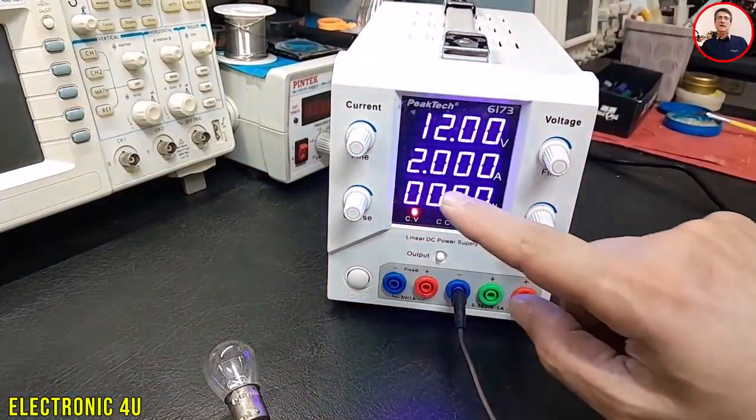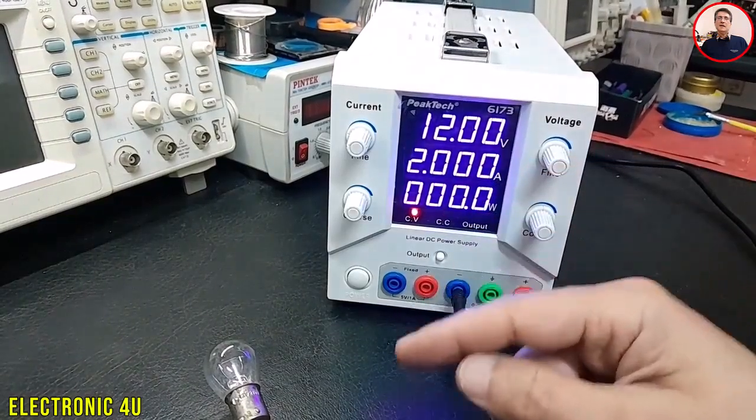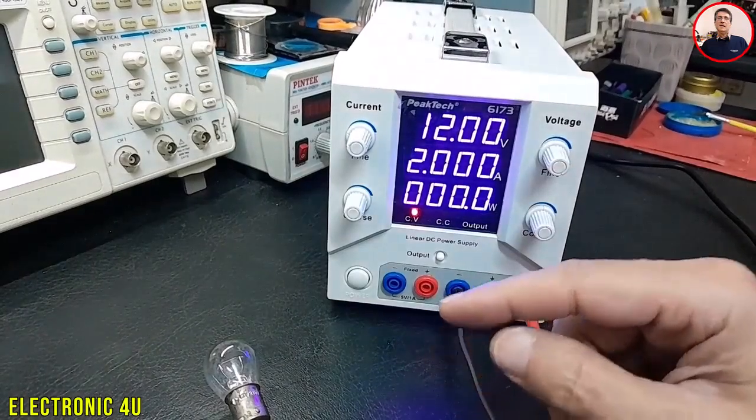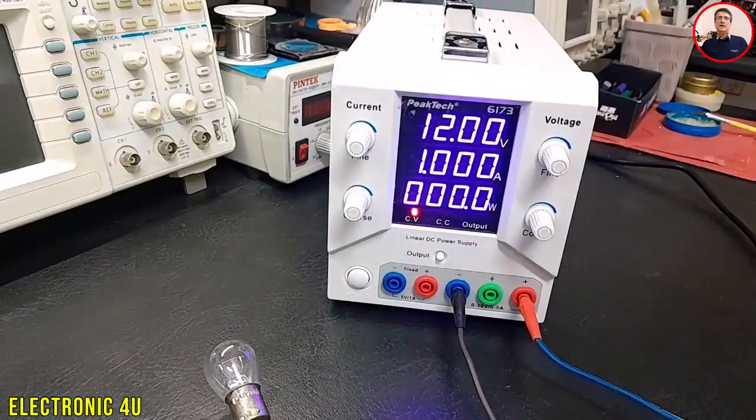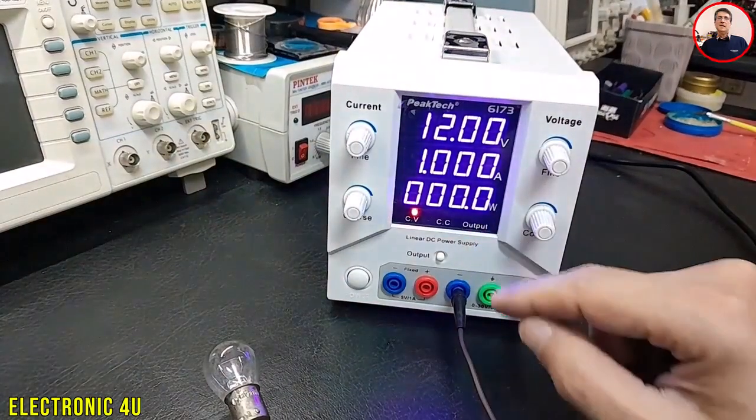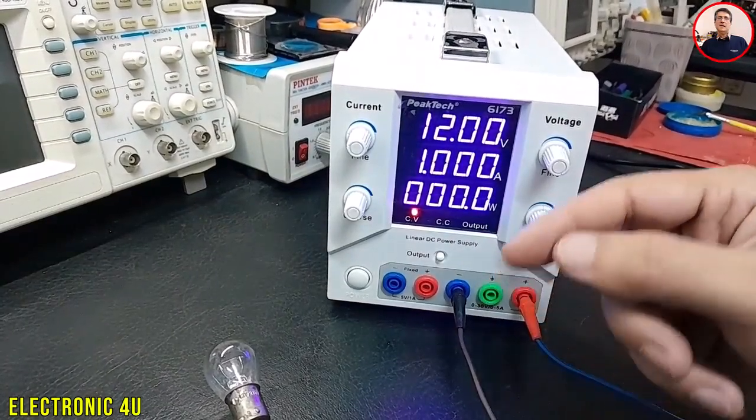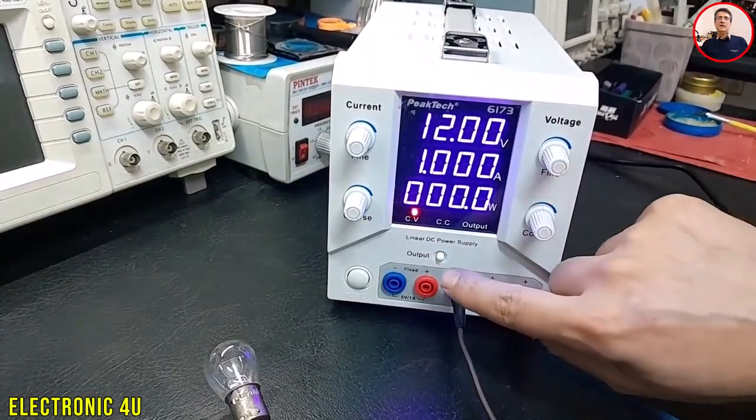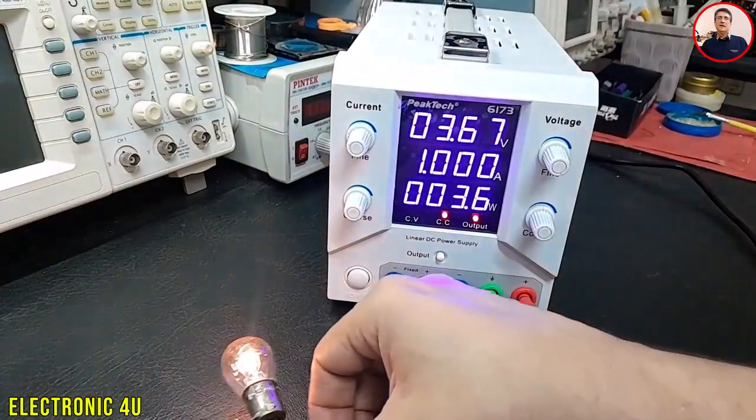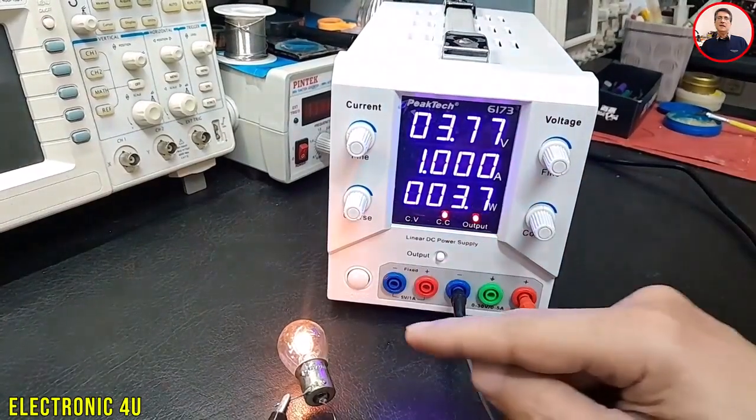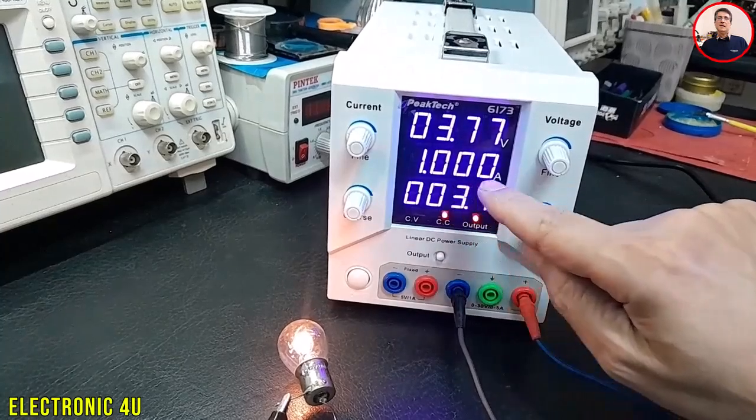Now, if the voltage stays at 12 volts and we set the current to 1 amp, because the lamp needs more current, the device works in CC mode. Since the current is limited to 1 amp, the device does not allow more current and lowers the voltage so the current doesn't go above 1 amp. The lamp is on, voltage is below 12 volts, and the current is shown.